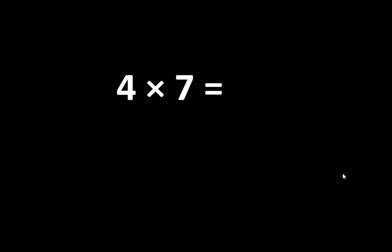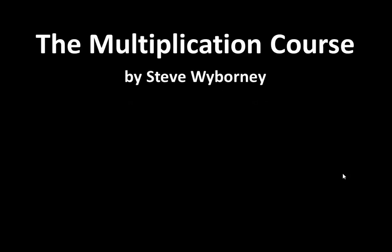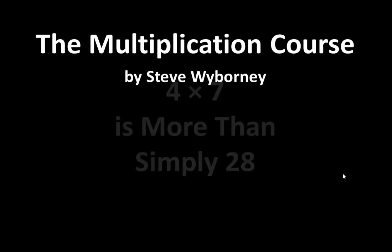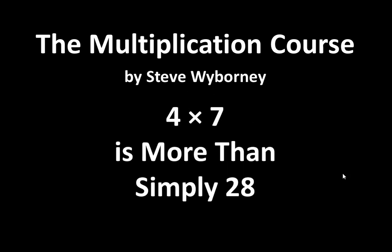So, 4 x 7 is equal to 28, and that is an important idea. But as you can tell, it's not the end of the story. There are many more relationships, many more connections, and many more ideas waiting to be discovered as we take a closer look at multiplication. This is the Multiplication Course. My name is Steve Wyborny, and this is a reminder that 4 x 7 is more than simply 28.